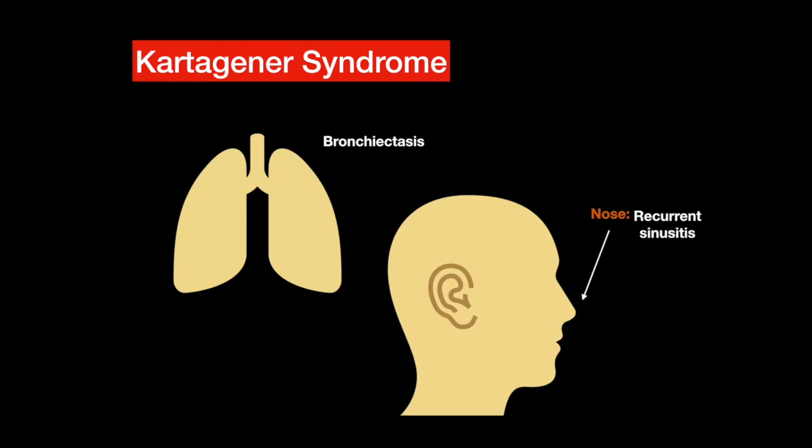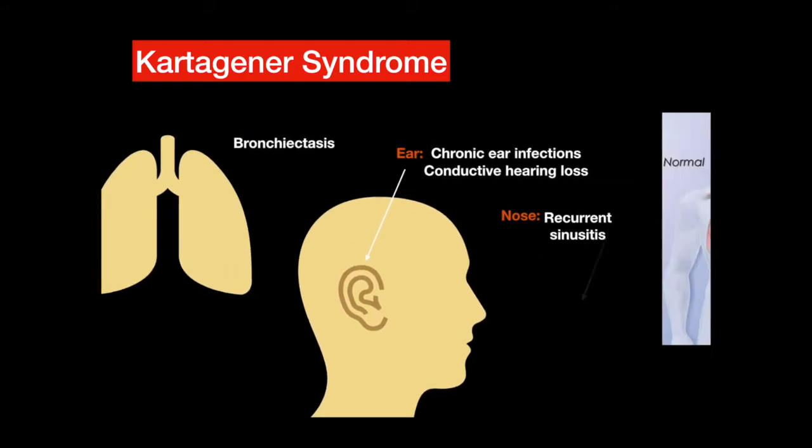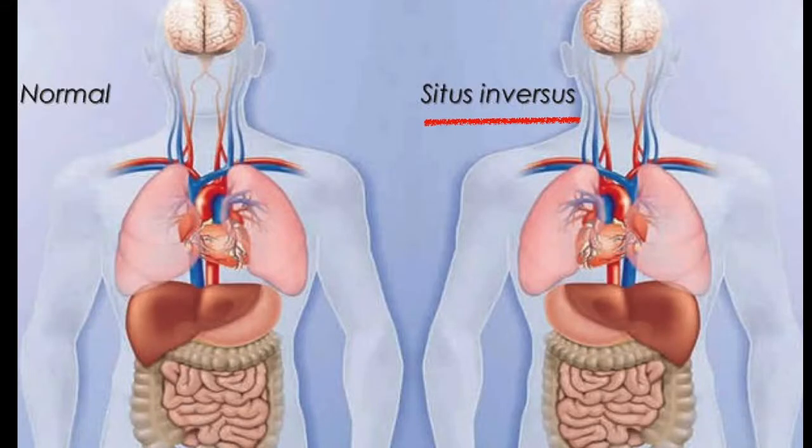Defective cilia in the lungs can cause bronchiectasis, in the nose recurrent sinusitis, in the ears chronic ear infections and conductive hearing loss, and even situs inversus, in which organs have been inverted from their normal position.